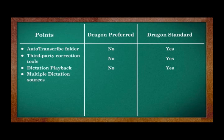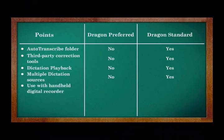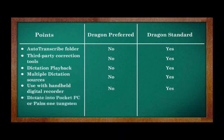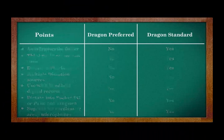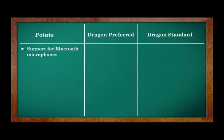Availability of multiple dictation sources: use a handheld digital recorder to capture your dictation when you're away from your desk. You can also dictate into a Palm Tungsten, as well as a digital recorder or Pocket PC, to capture your dictation. Dragon also offers support for cordless or array microphones, and wireless Bluetooth microphone compatibility is available.